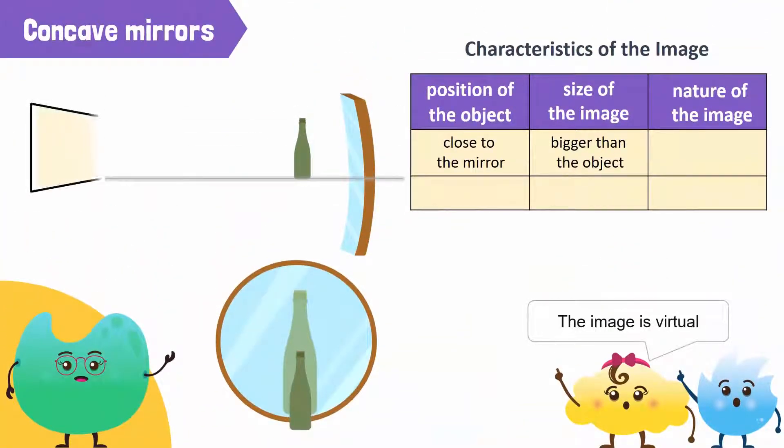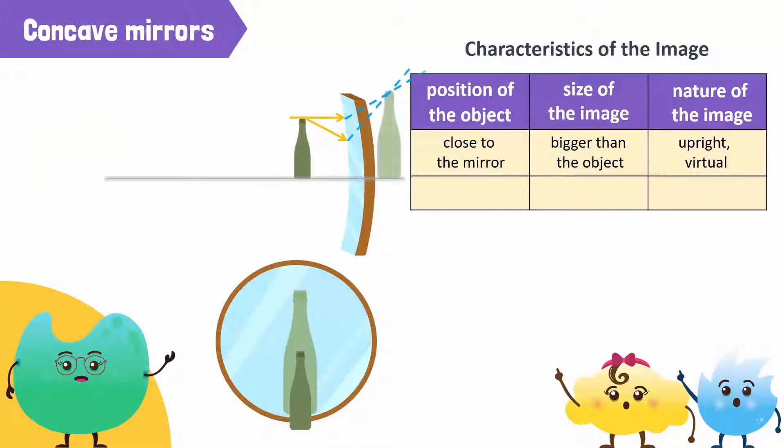Then, this looks upright and is virtual. It feels like it is behind the mirror. This is because when the bottle is placed close to the mirror, light rays travel from the bottle to the mirror. The rays are reflected on the surface of the mirror and from there, they diverge or move away from each other.